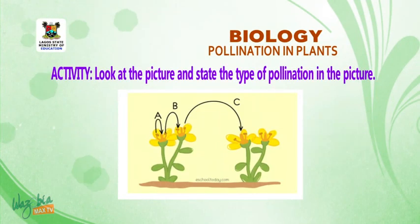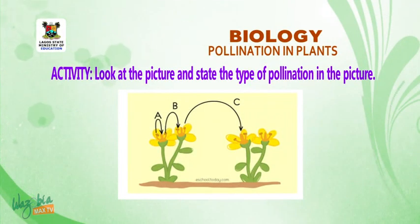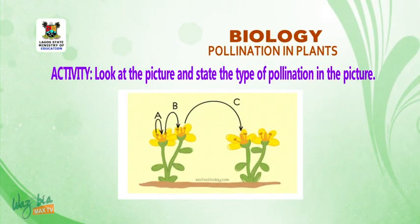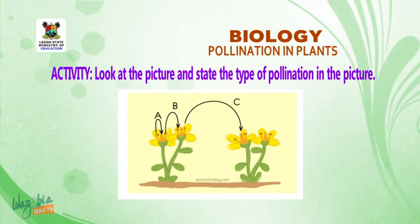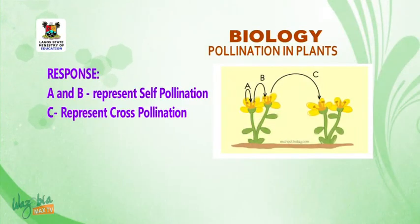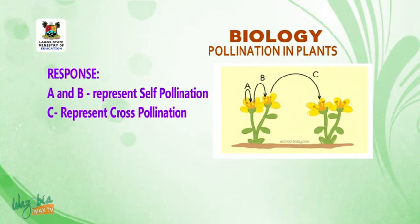Student activity: Look at the picture and take note of your observations. State the type of pollination that you can see in the picture. For A and B, it represents self-pollination. C represents cross-pollination.